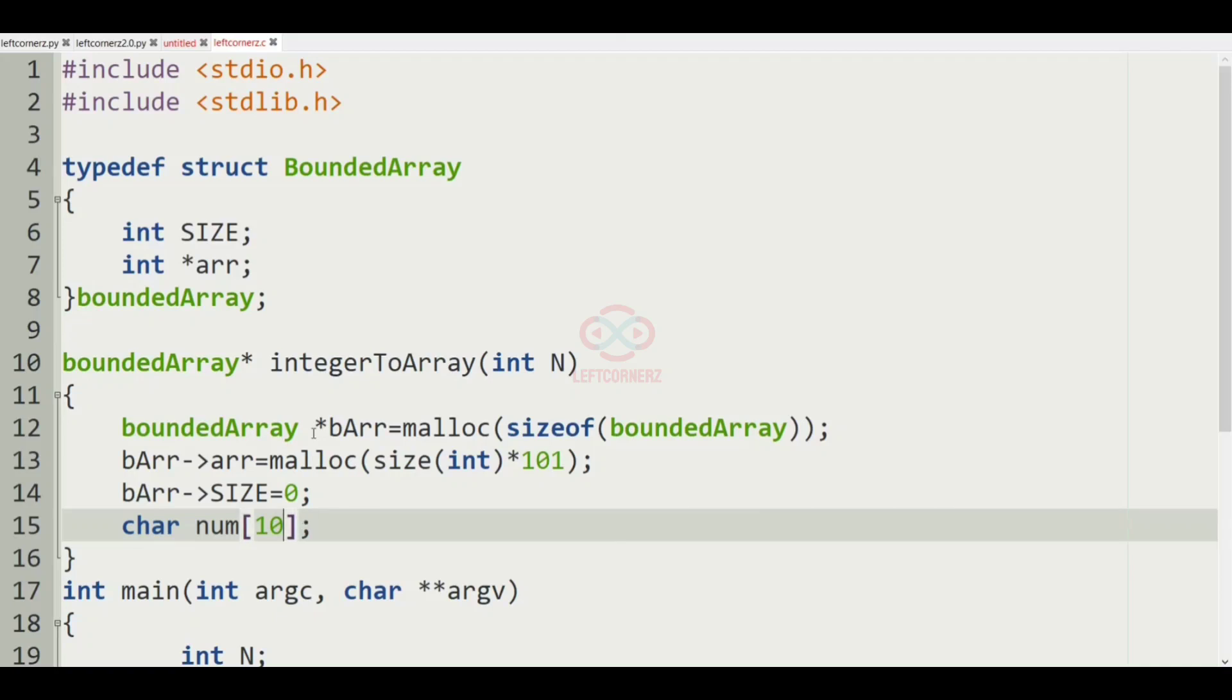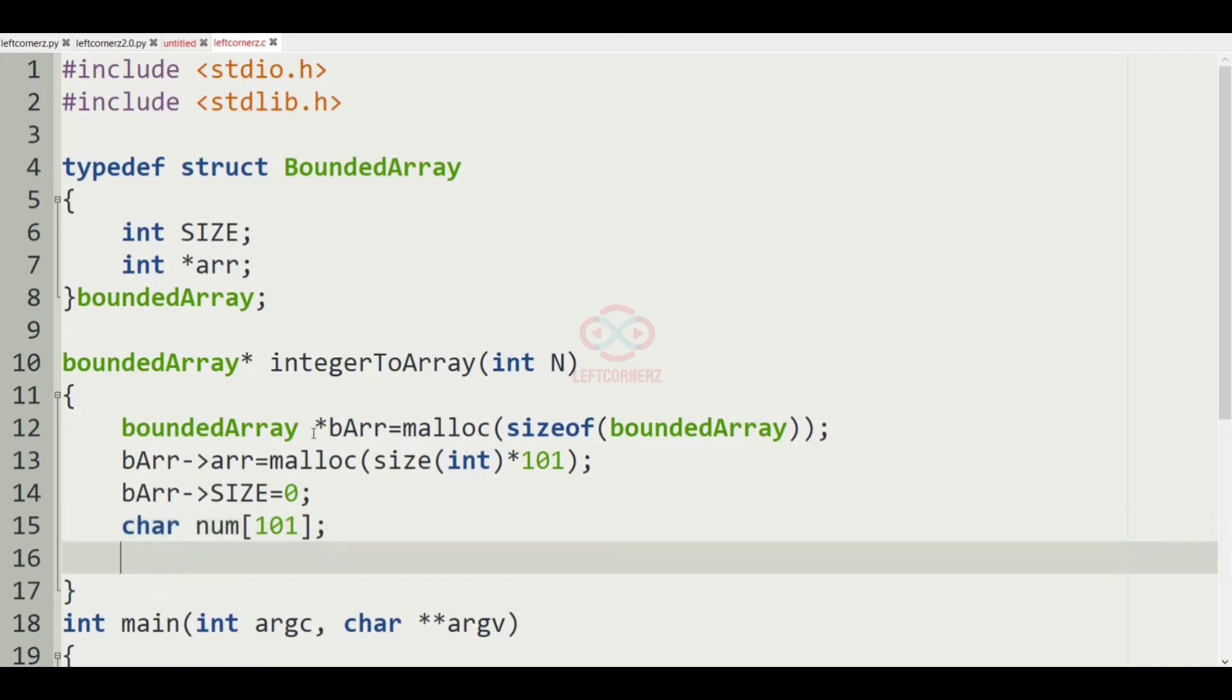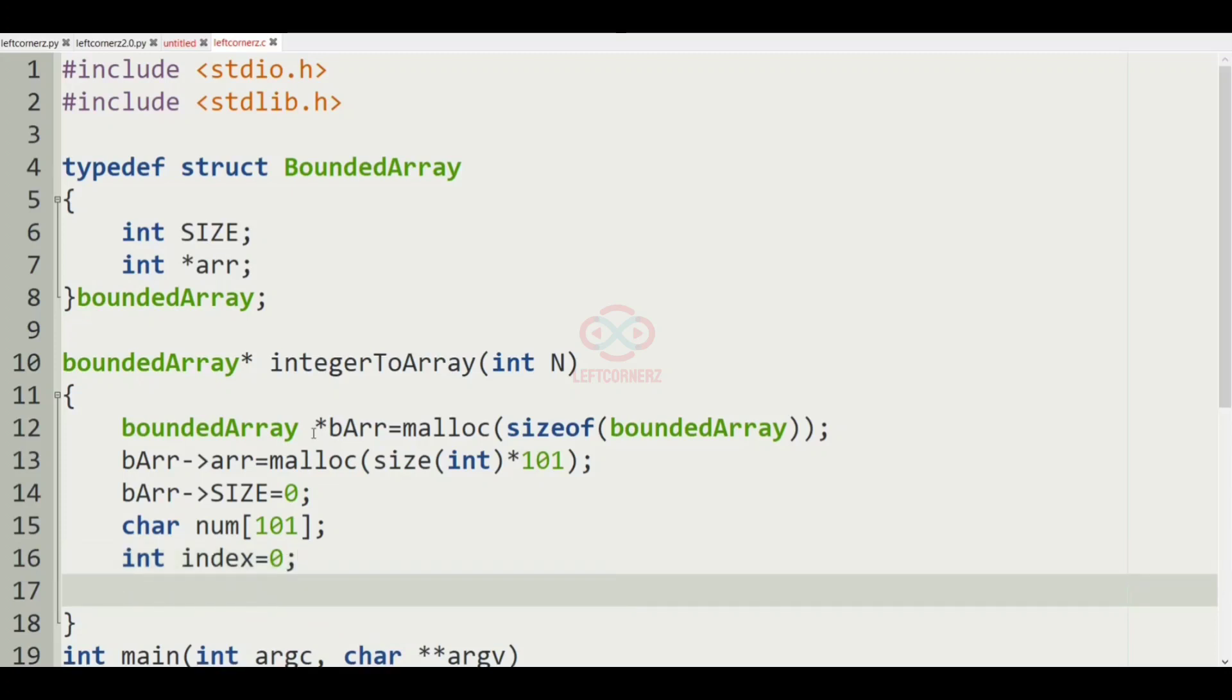And we'll have the character num of 101 and int index equal to 0 initially.